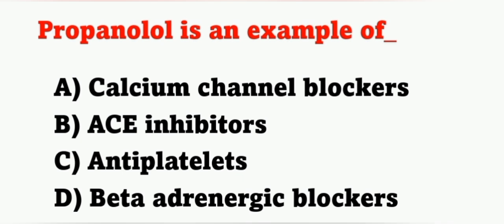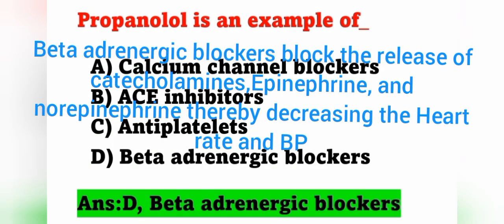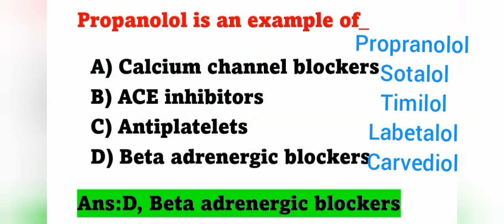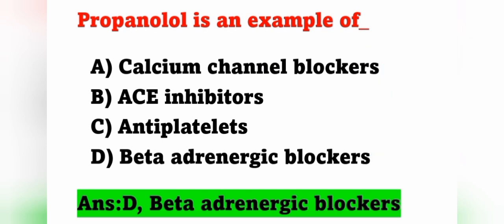Next question: propranolol is an example of — option A: calcium channel blockers, option B: ACE inhibitors, option C: antiplatelets, option D: beta adrenergic blockers. Propranolol is an example of beta adrenergic blockers, option D is correct. Beta adrenergic blockers block the release of catecholamines and epinephrine, thereby decreasing heart rate and BP. Examples include propranolol, sotalol, pindolol, carvedilol, and labetalol.